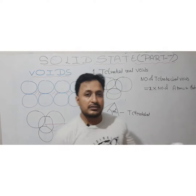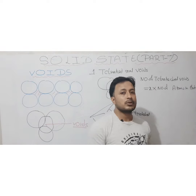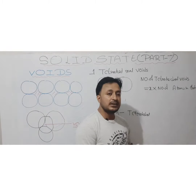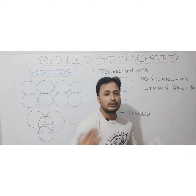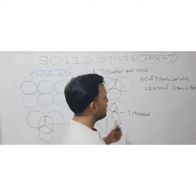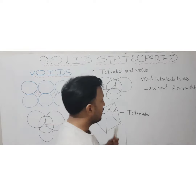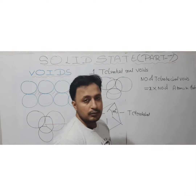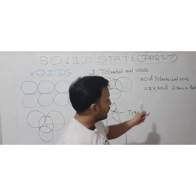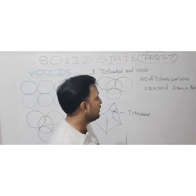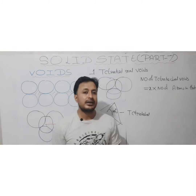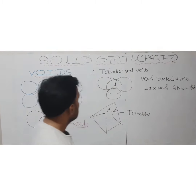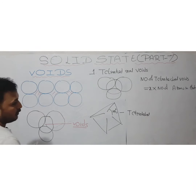In a simple cubic lattice there is only one atom, so the number of tetrahedral voids is 2. In BCC it is 4, and in FCC it will be 8. The tetrahedral voids are always related to twice the number of atoms, so we can determine the total number of tetrahedral voids in any lattice structure.